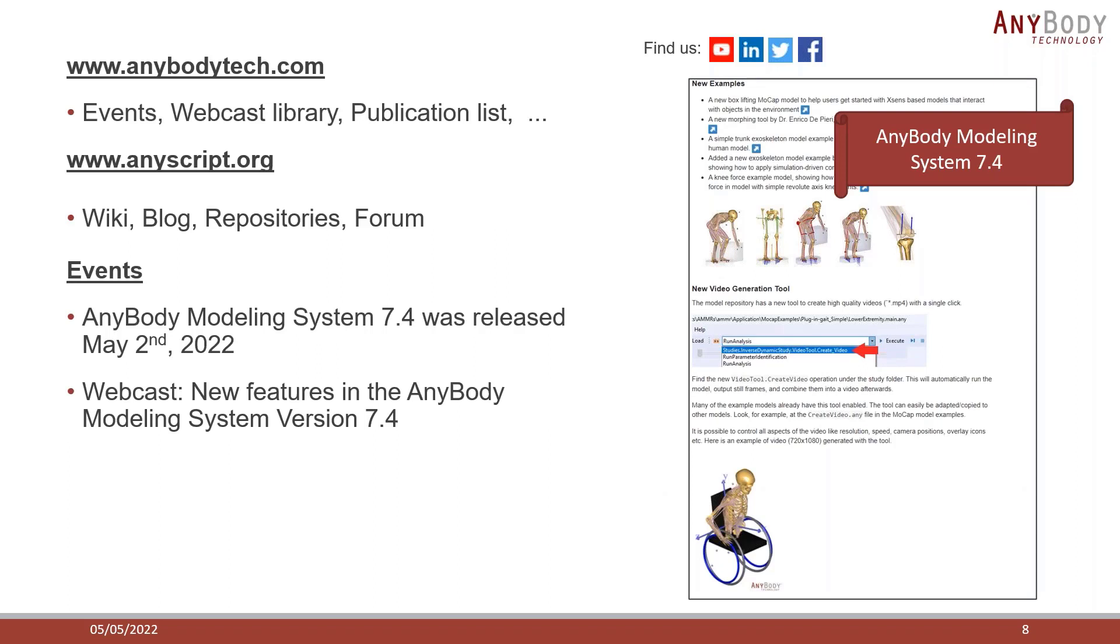I would also like to announce the recent release of the Anybody Modeling System version 7.4. This version was released on May 2nd, so only a few days ago, and is now available on our website. If you are interested in trying it out, you can go and request a trial license for the system. The main new model highlights of this version are several new examples of exoskeletons and environment interactions, and there's also a tool for applying femoral torsion to the TLEM lower extremity model. Most of the example models now also include a very convenient tool for creating high-quality videos of the model with a single operation. Beside these additions, the new model repository also includes a host of new model improvements to all of the body parts and many bug fixes to problems discovered since the last release. We will release a webcast in the beginning of June, where you can see all of these new features and listen what else is in the pipeline for Anybody. The registration for this webcast will be live on our website shortly.